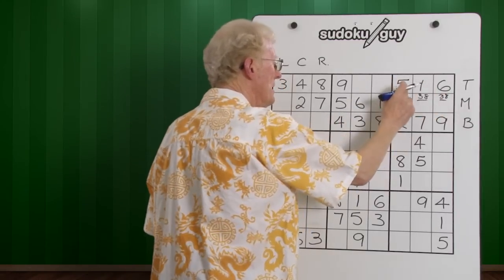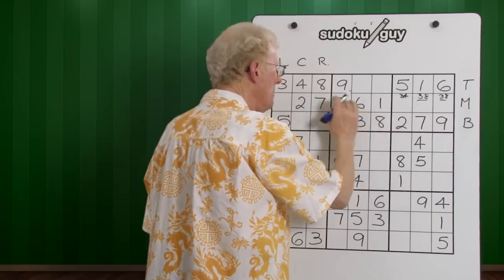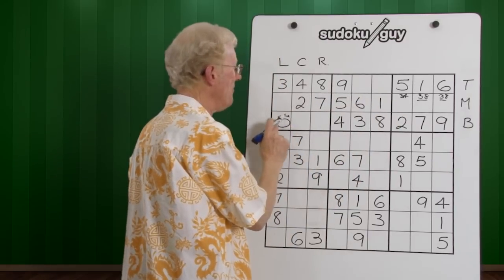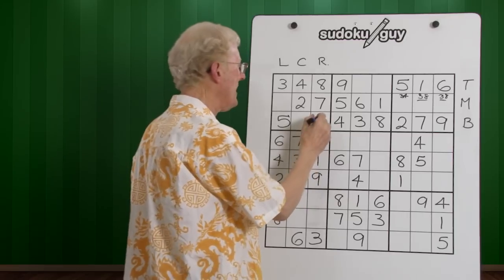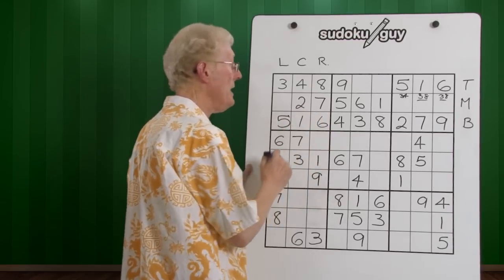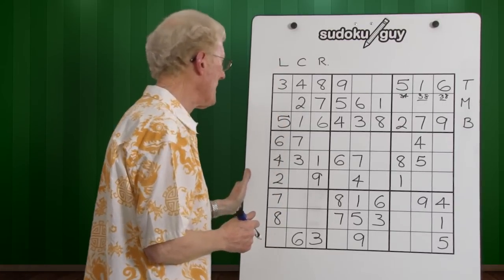Now look, we have a 5, 1, 6 here, a top, 5, 6, 1, same numbers in the middle. Therefore, we know that this is going to be a 5, 1, 6 or 5, 6, 1. Well, I can tell you right now, there's a 1, so that'll have to be the 6, and that'll have to be the 1, just like that. Now let's look at some other things.